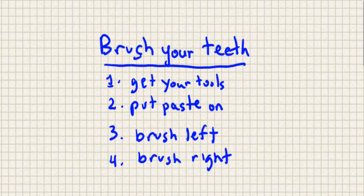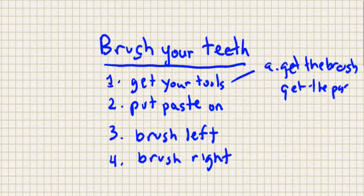That's kind of an algorithm, and one thing to think about is that things are hierarchical. Like 'get your tools' really has a couple of parts: get the brush, get the paste — and it might even have sub-steps like open the cabinet door.